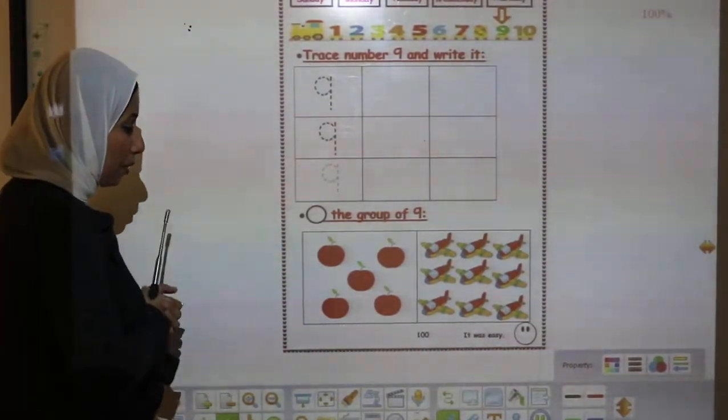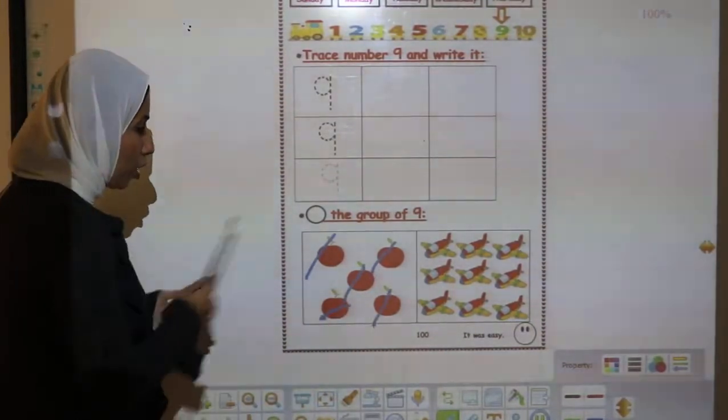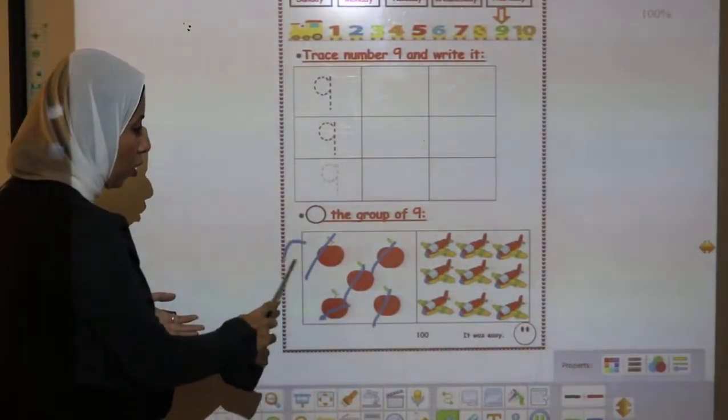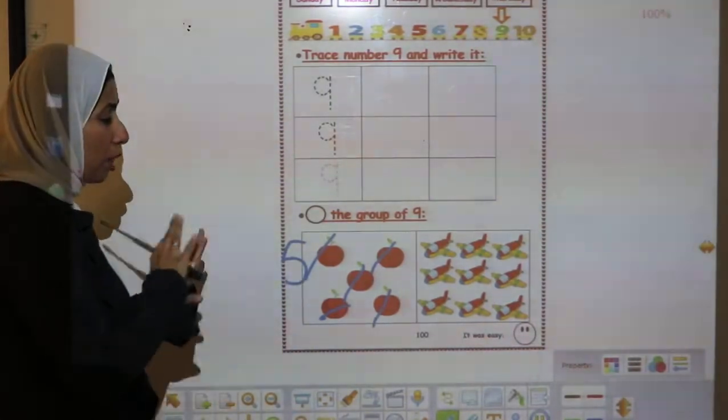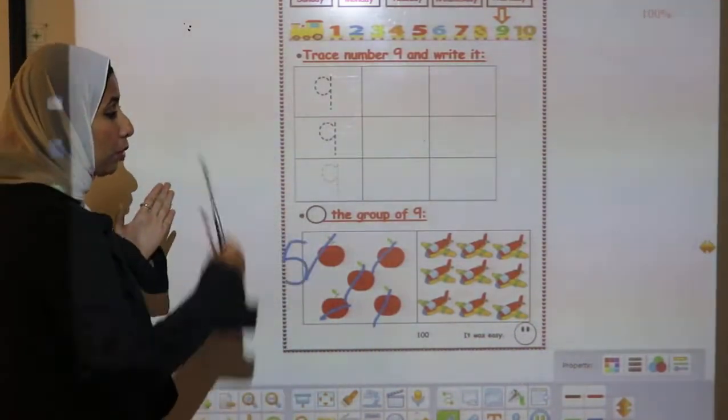Try to count these apples. 1, 2, 3, 4, 5. So, they are 5. I will not make a circle. I need to make a circle around number 9.